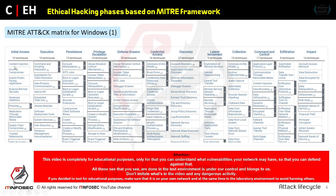You can easily search the MITRE ATT&CK official website to learn about all the items. Let me describe some of them. In initial access, we have dangerous items such as phishing attacks, fake web pages, and stealing information — these are attacks that networks and people are vulnerable to.